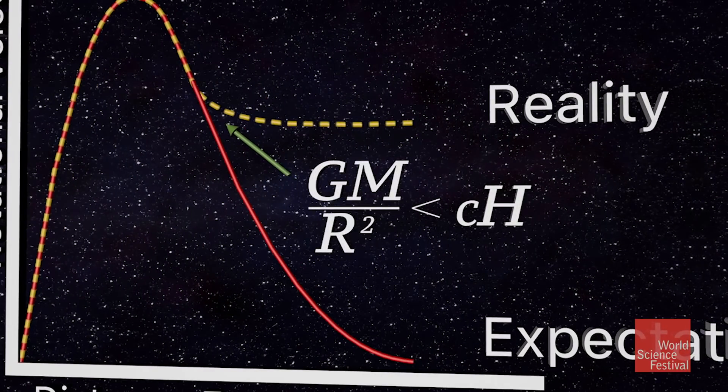And there's an important hint in how and where that happens. It turns out that it happens at the moment when the acceleration drops below a certain critical value, and if we express that value numerically we find a connection with the expansion rate of the universe — this Hubble constant.